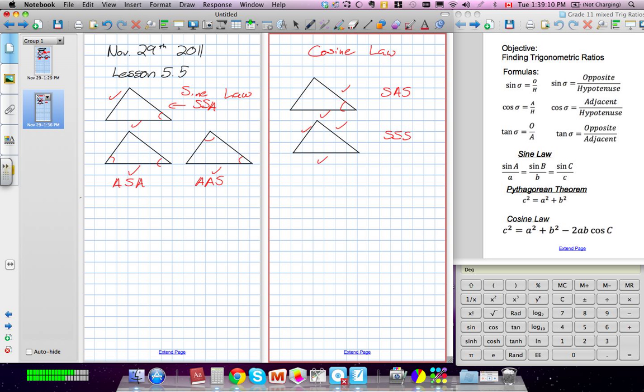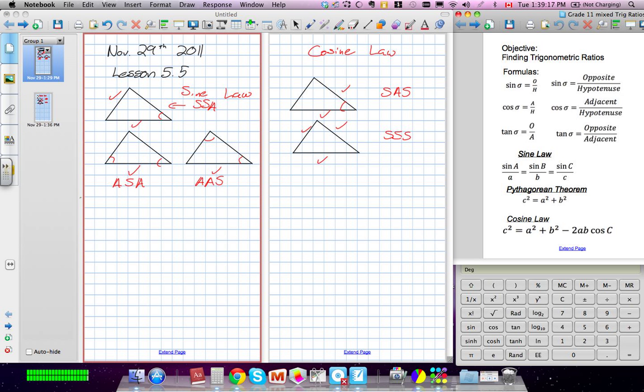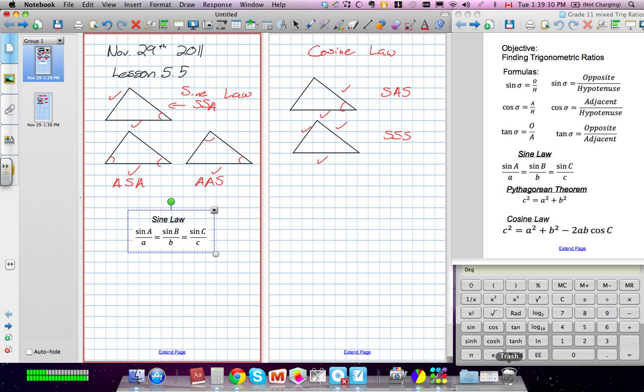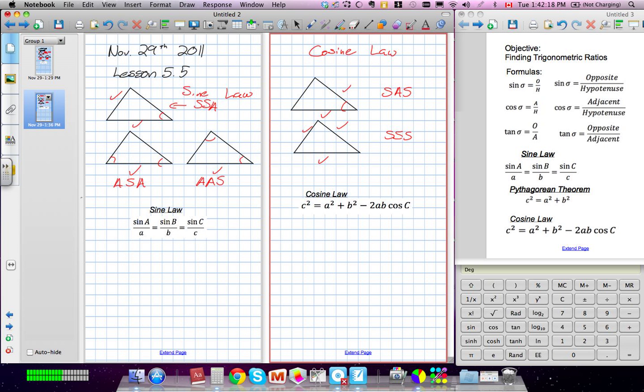I've drawn the three types of triangles and when you have certain bits of information, one is for sine law and the other two for cosine law. We have our sine law here and our cosine law.